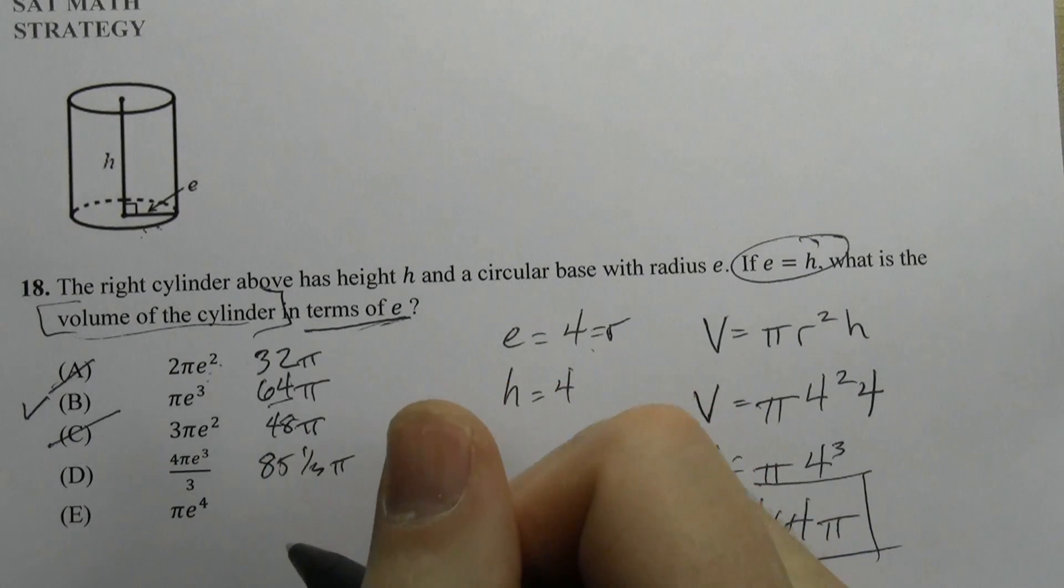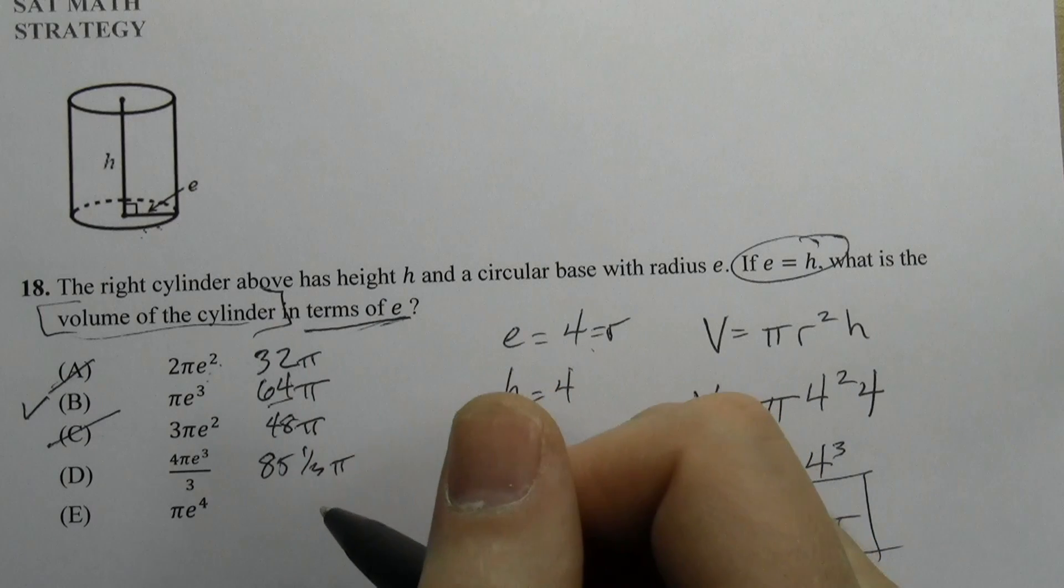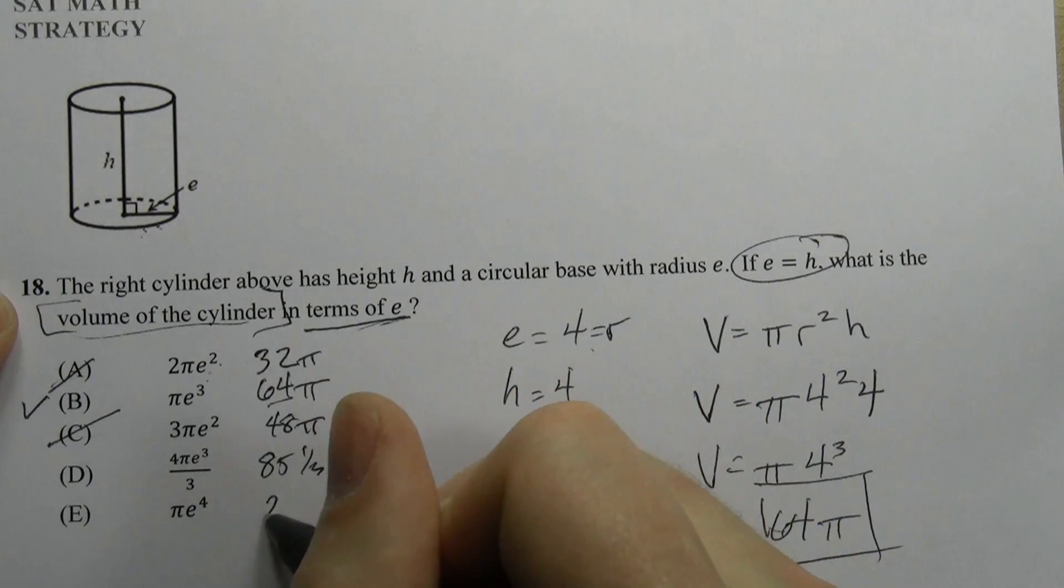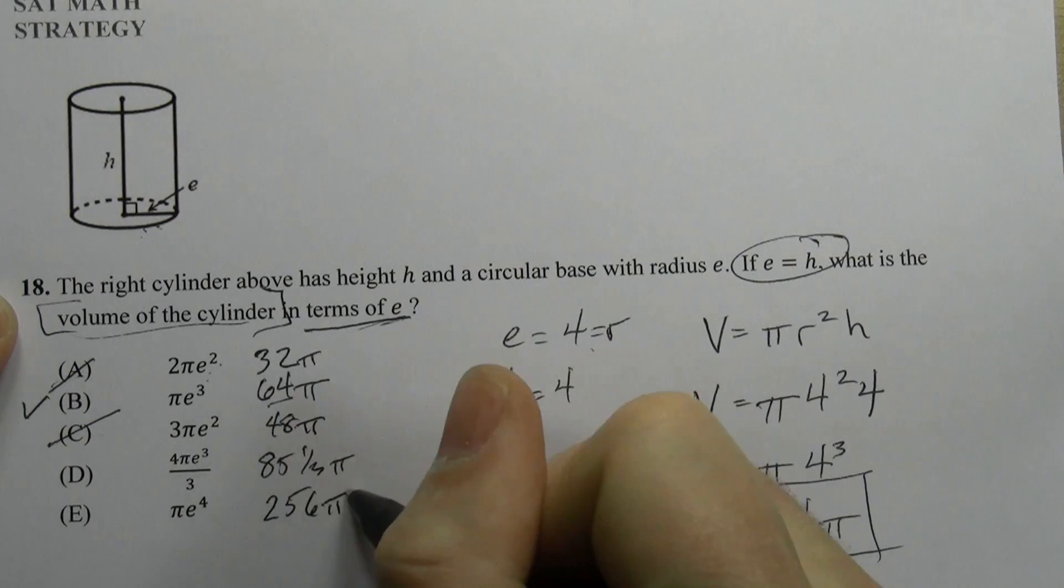And the last one is π e^4. 4 to the 4th is a big number. 256π. Really not right.